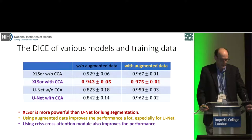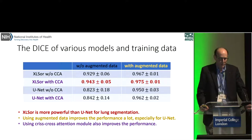The results shown in this table show that the Excelsior with crisscross attention model had the highest performance, the highest dice coefficients, both without augmentation using the MUNIT GAN and with the augmented data.